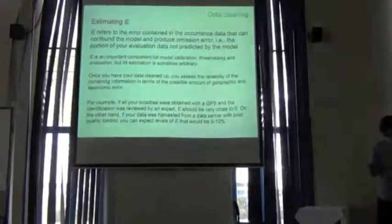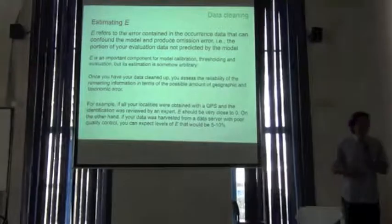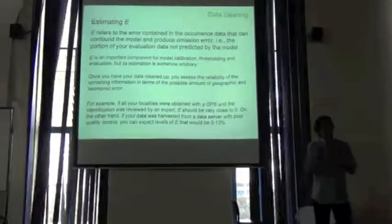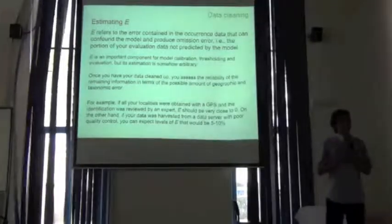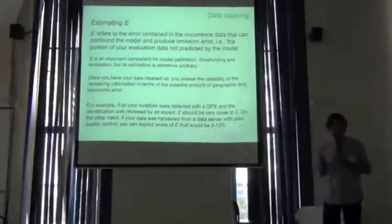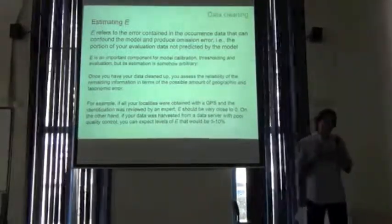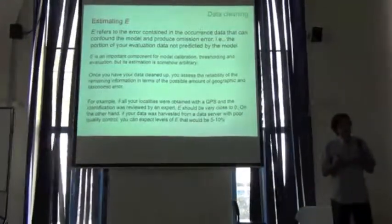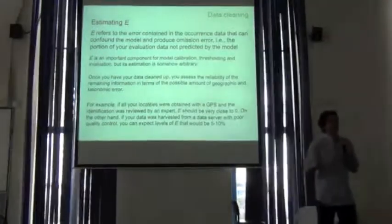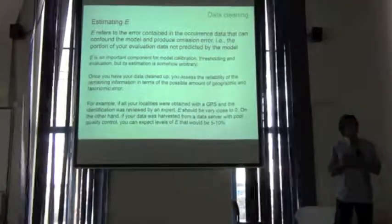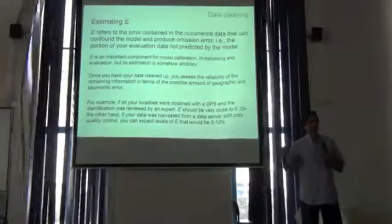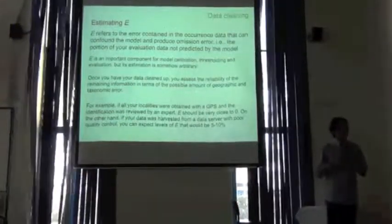There is no robust method for estimating error rate — it's a matter of how well you know and control your data. If the data was gathered by you using GPS and you are the expert on the species, you can be certain that your database is very reliable and E should be very low or even zero. On the other hand, if you harvest information from museum databases or other sources you don't control, it is almost certain that there is some level of error. In our experience, we estimate that around 10% of records could have a problem in the georeferencing or identification. Tom will show you how to incorporate this error information in our modeling presentations.